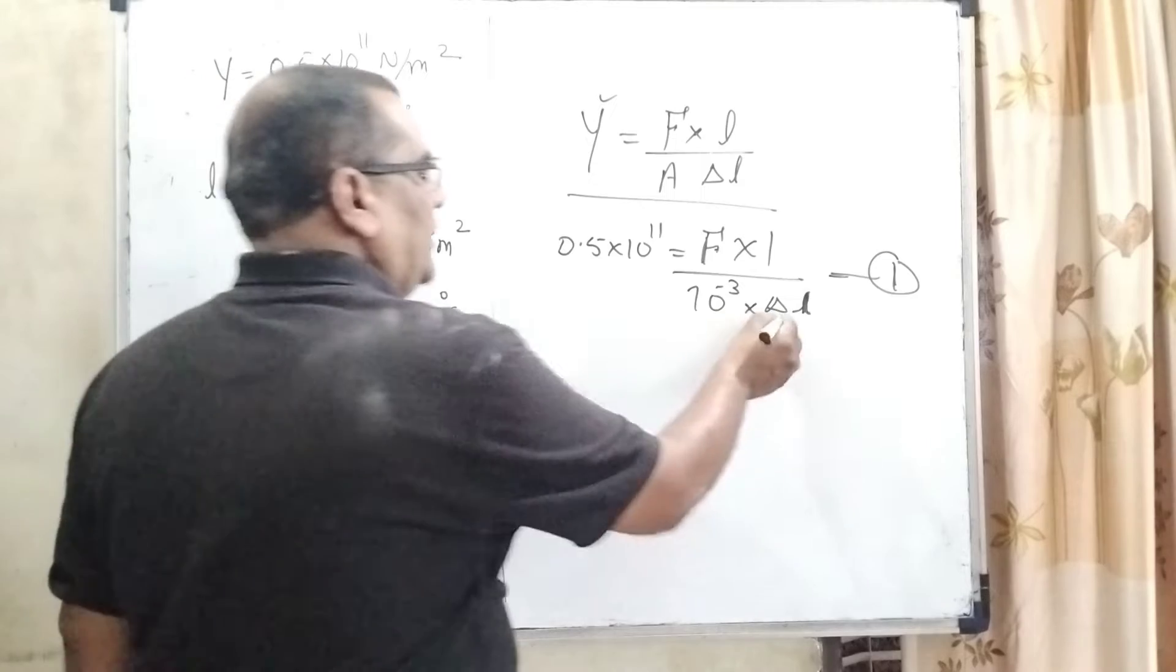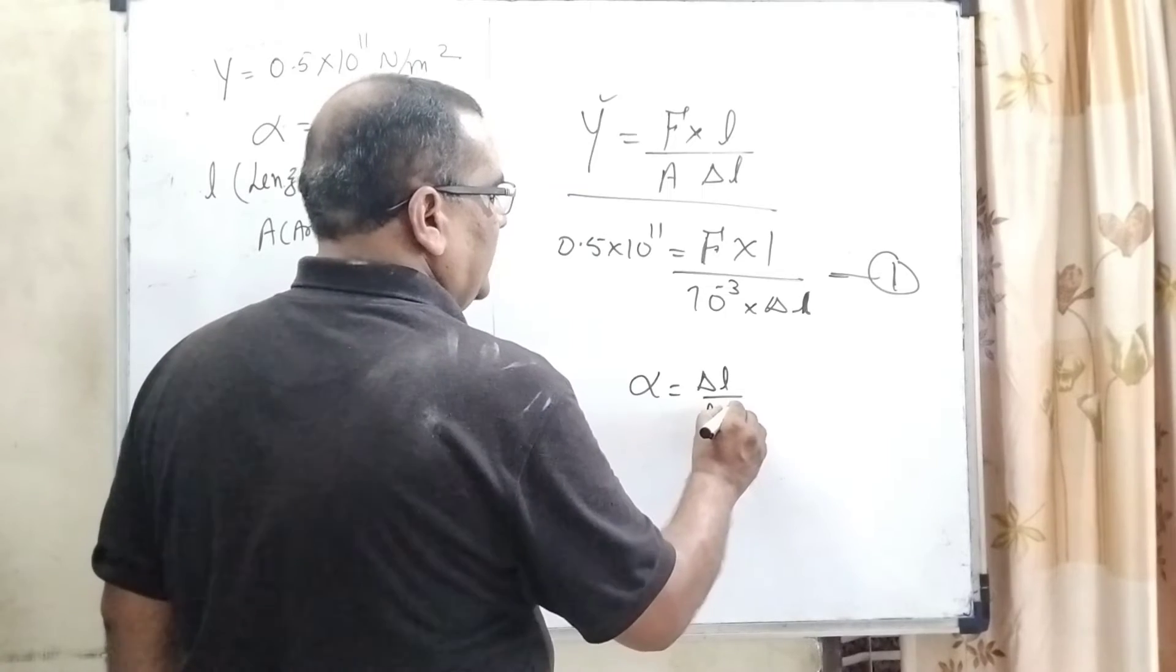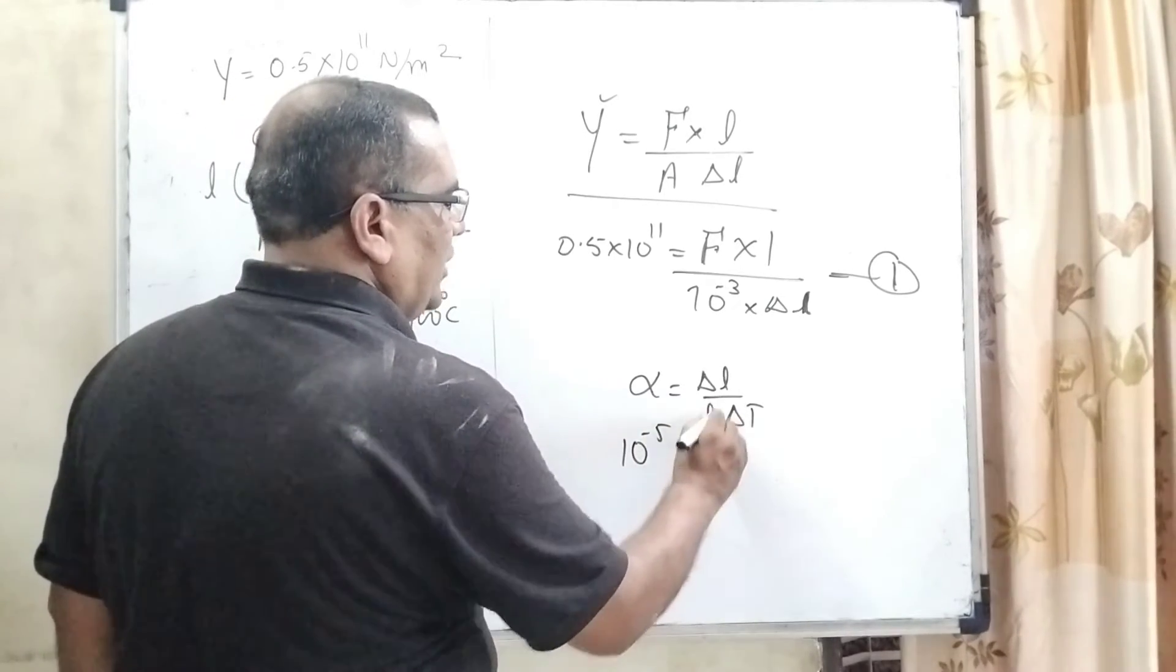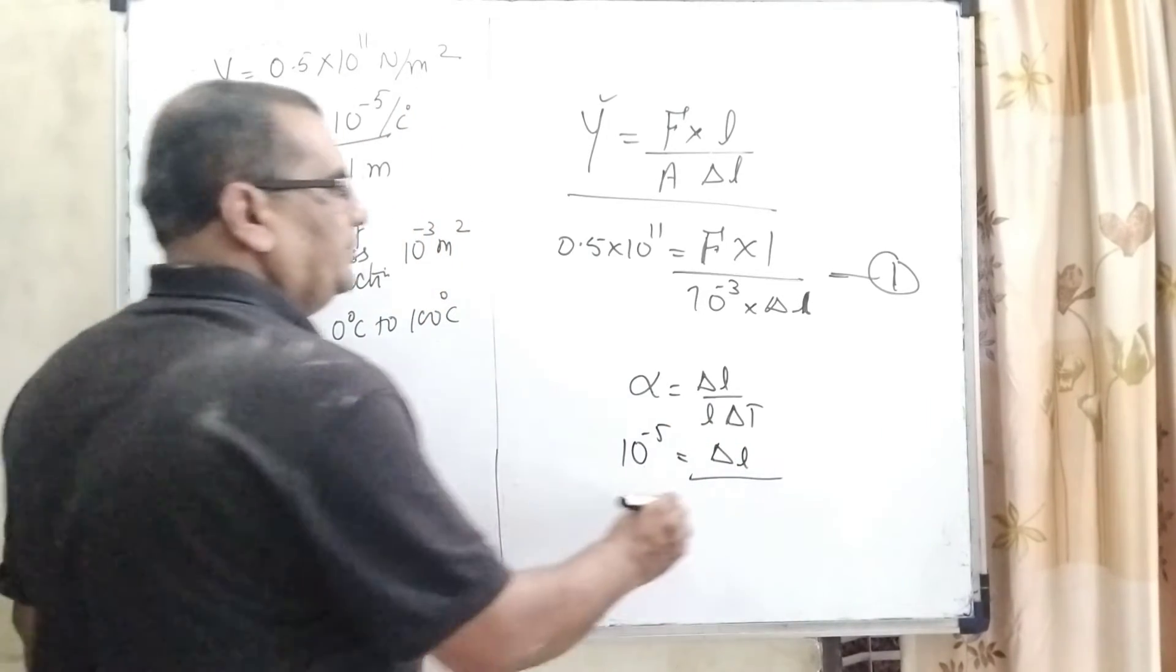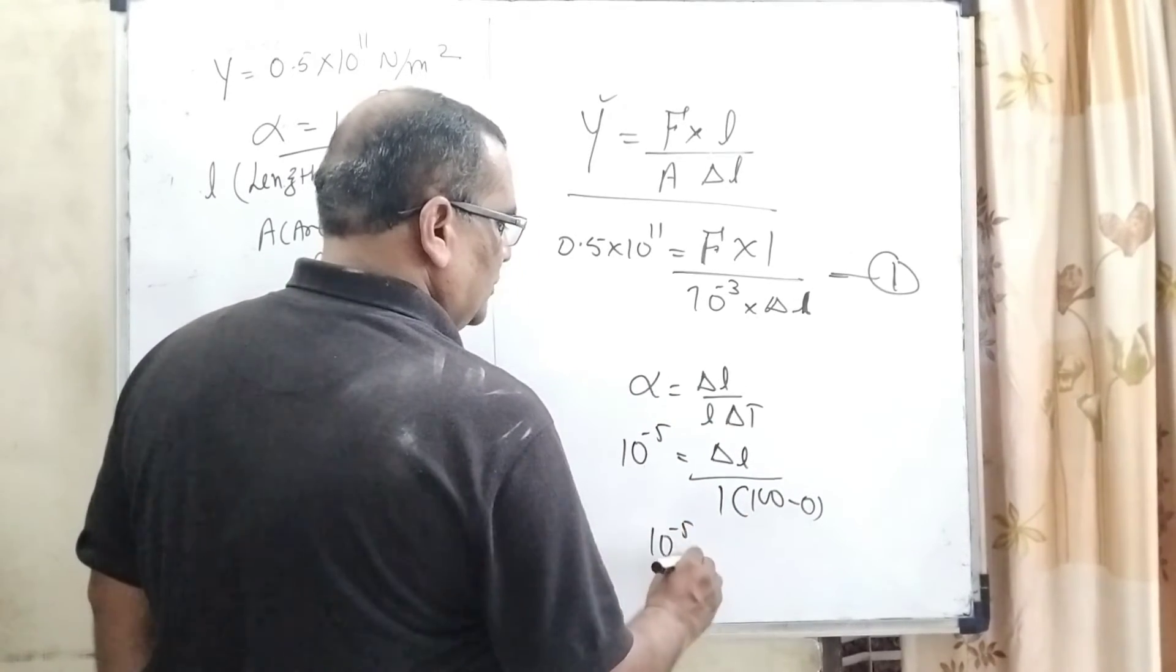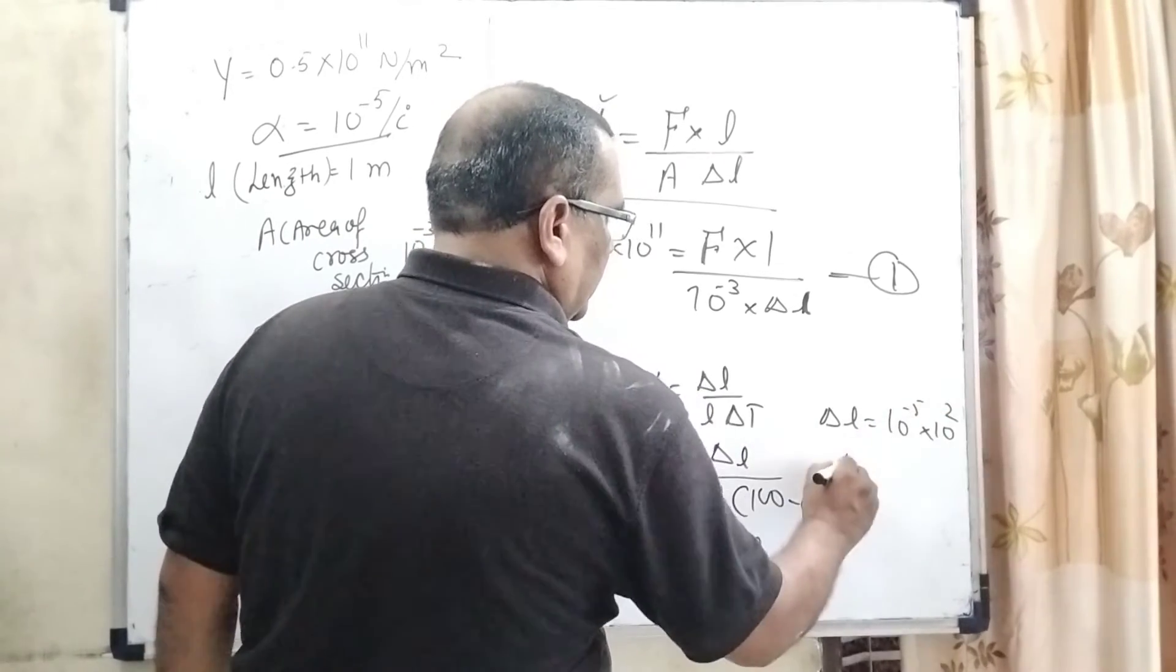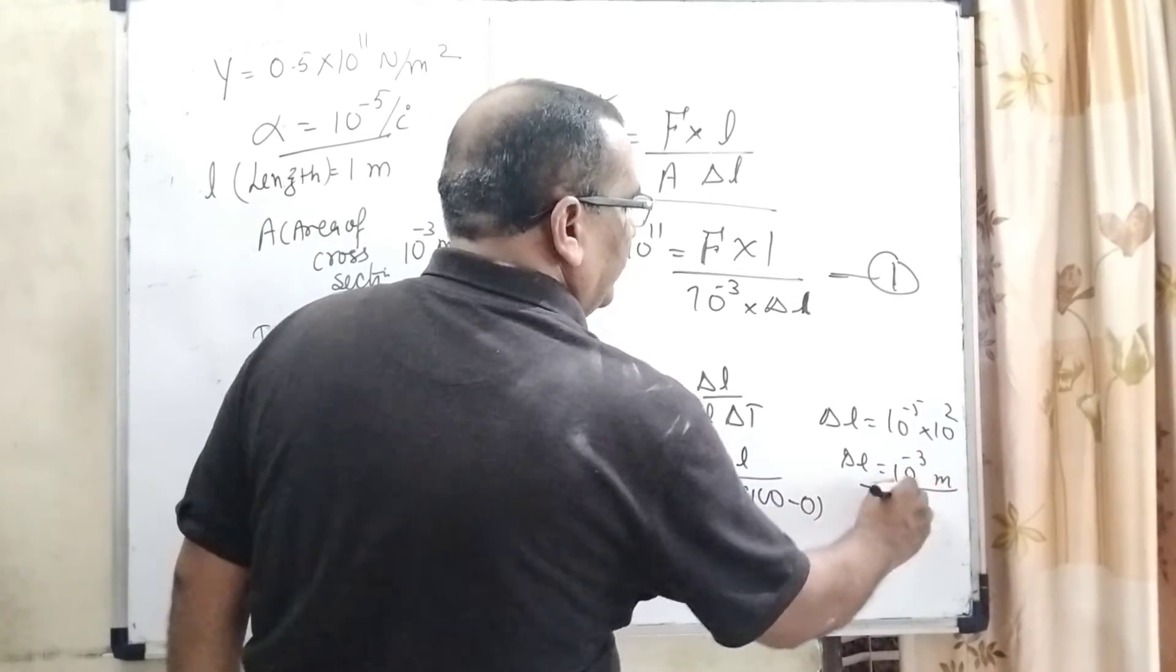As we know that thermal expansion: alpha equals delta L over L into delta T. Here, thermal expansion alpha is given as 10 raised to power minus 5. We have to calculate delta L. Initial length L is given as 1 meter, and change in temperature is 100 minus 0, which equals 100. So, 10 raised to power minus 5 equals delta L over 1 into 100. Therefore, delta L equals 10 raised to power minus 5 into 10 raised to power 2, which equals 10 raised to power minus 3 meter.